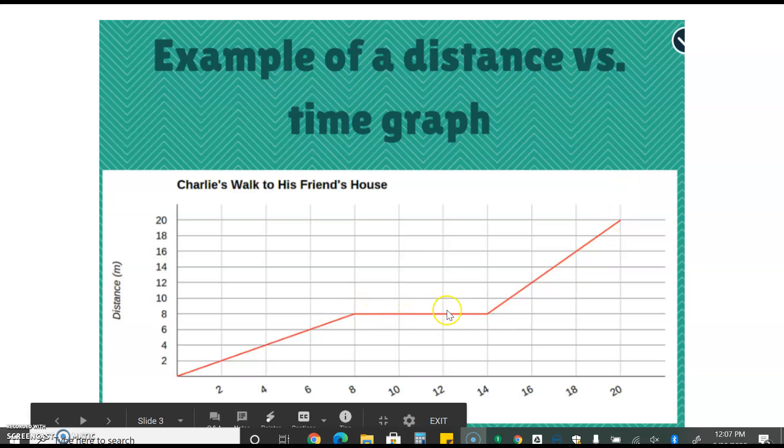But he does stop along the way and that's where the straight line is. Both of these diagonal lines show us that he's moving away from his reference point or his original starting point which is his house.